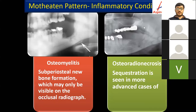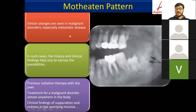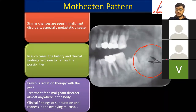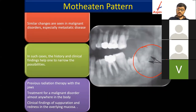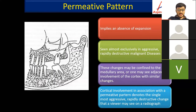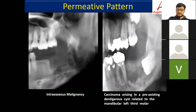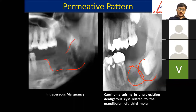The moth-eaten appearance is also characteristic of malignancy. This lesion is intraosseous squamous cell carcinoma — the one originating from within the bone — and shows a moth-eaten appearance. We also have a permeative pattern seen in malignancies. Another example is carcinoma arising from a dentigerous cyst, which is also a malignancy within the bone.